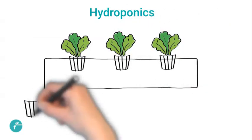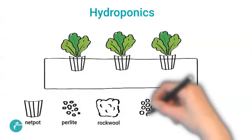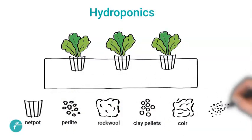It uses other growing media such as a net pot, perlite, rockwool, clay pellets, coir or vermiculite.